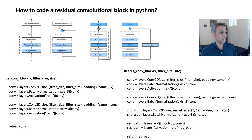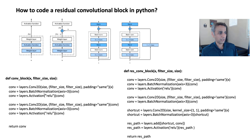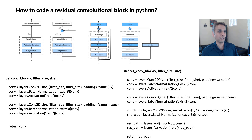On the left-hand side, I'm showing a regular convolution block — how you define one with no residual. You have conv, batch normalization, activation; then conv, batch normalization, activation; another convolution, another batch normalization, another activation. That's how you define a regular convolution block.